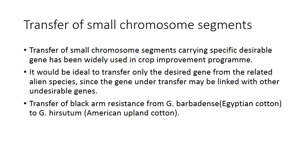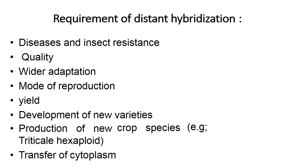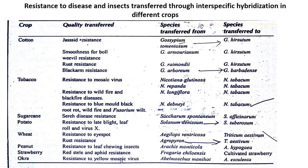The requirements in distant hybridization are: quality, resistance, adaptability, mode of reproduction, yield, development of new varieties, cytoplasmic transfer, and production of new crop species. A list of diseases and insect resistances transferred through interspecific hybridization in different crops is presented.